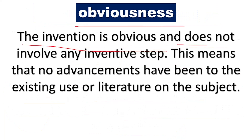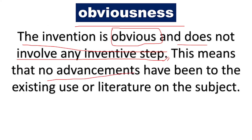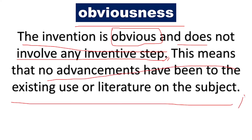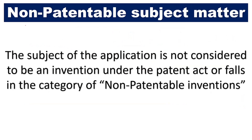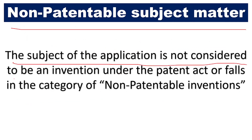The next ground is obviousness — the invention is obvious and does not involve any inventive step. Obvious means something which everybody knows; it is a common thing with no new invention involved. If it falls in the public field, they can put for pre-grant opposition. This means that no advancements have been made to the existing literature on the subject, and if you have written the same thing without any advancement, then pre-grant opposition can be applied against your patent.